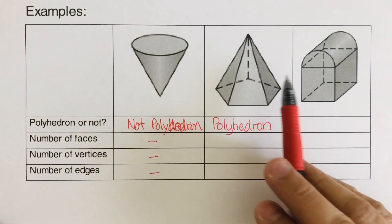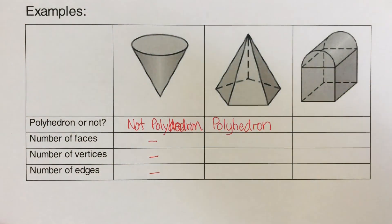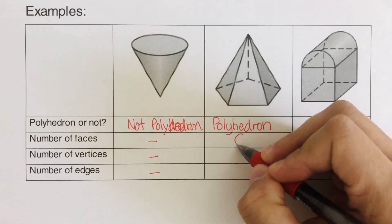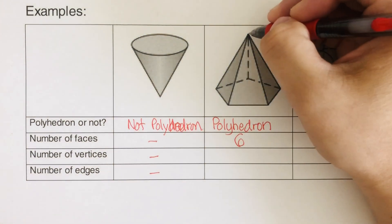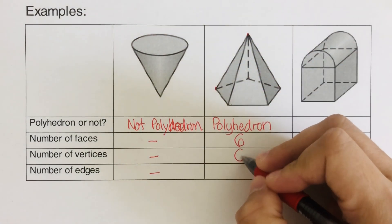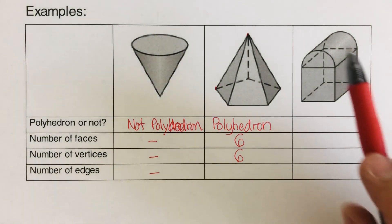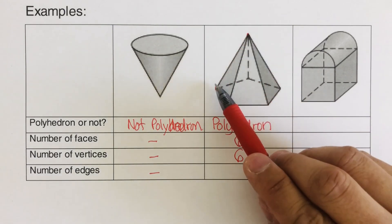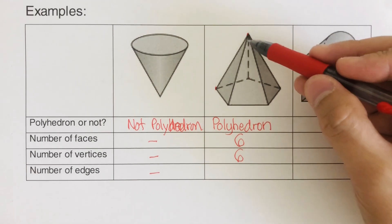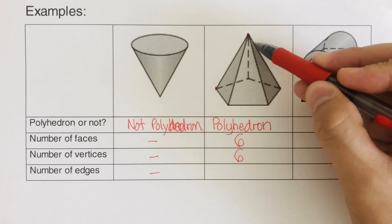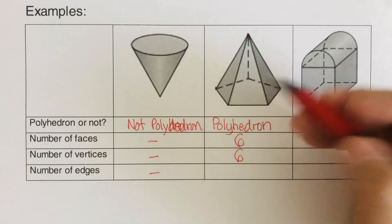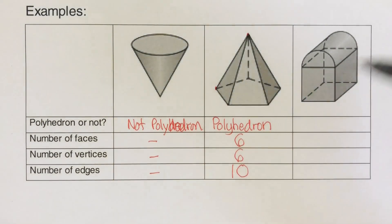Now let's count the number of faces — faces refers to the flat surface that is the covering. We have one, two, three, four, five, and then one at the bottom, so there are six faces for this. For the vertices — that refers to the corners — we have one, two, three, four, five, six; so there are six vertices. For the edges — edges refers to the line that connects one vertex to the other. We count the edges connected to the tip: one, two, three, four, five — so five connected to the tip — and then six, seven, eight, nine, ten. So there are ten edges for this polyhedron.